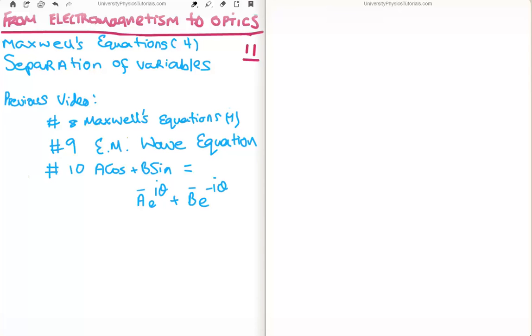The previous videos to this are 8, 9, and 10. In 8 I introduced Maxwell's equations, in 9 I derived the wave equation for electromagnetic waves, and in number 10 I did something I'll require in order to solve the wave equation and I converted a cos plus b sine into complex exponentials.